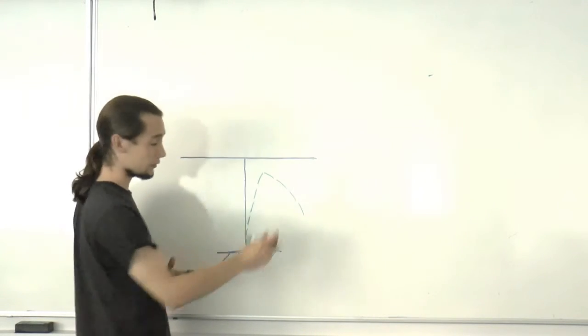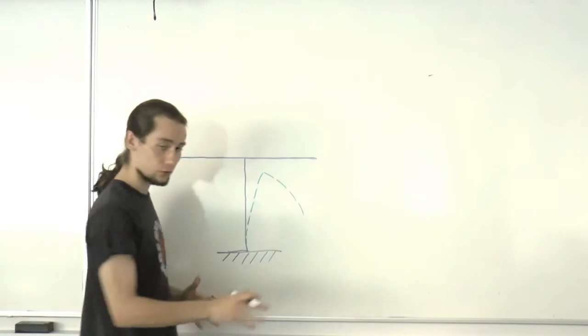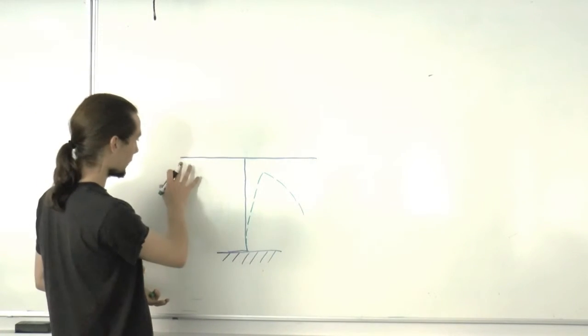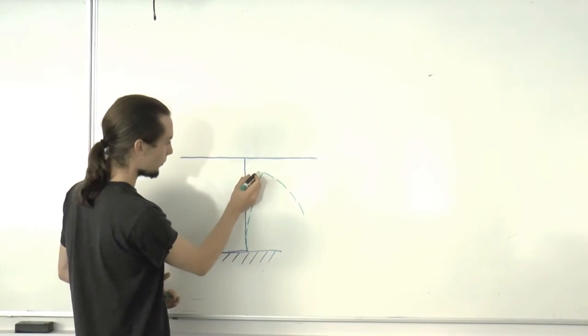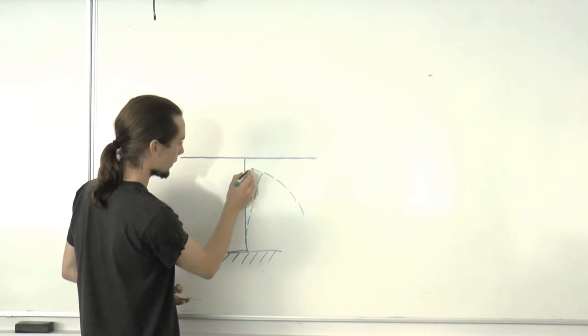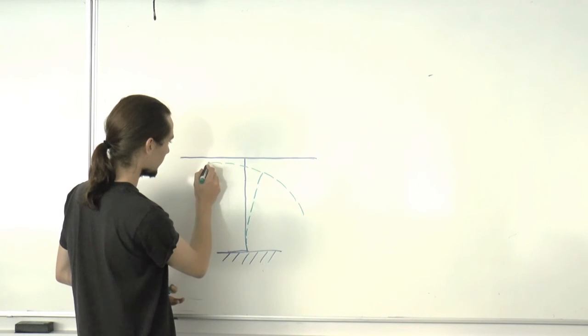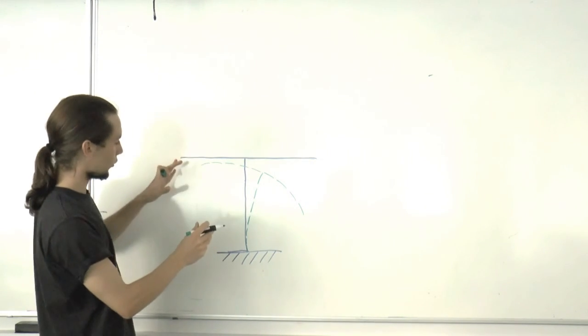If the point load was some distance away from the end, then there would be a straight section here. But because it's right at the end, you see curvature all the way. We've also got a bit less curvature. It's going to be 90 degrees to that column, but with curvature caused by the W load on the other side.